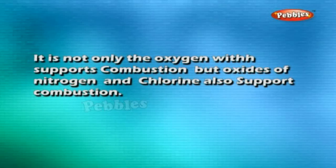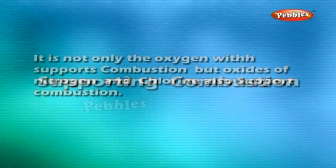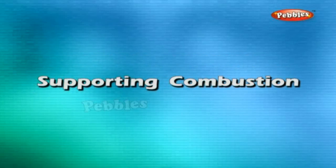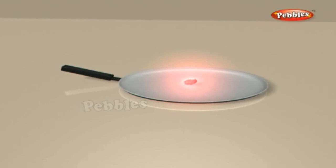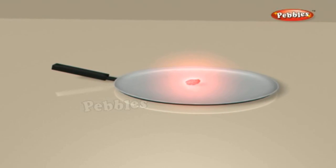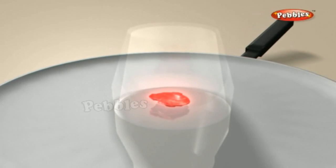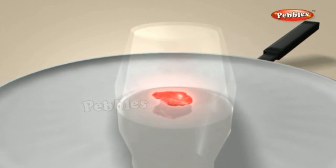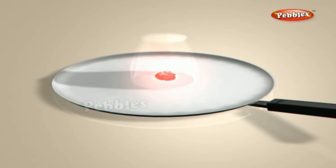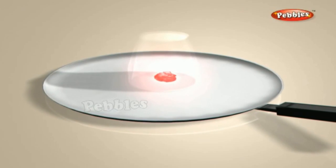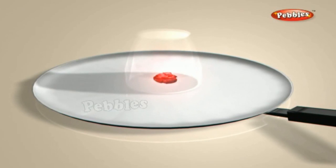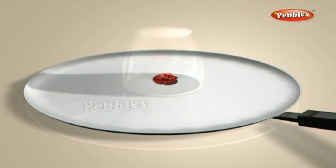Gases which have very low ignition temperatures and can easily catch fire with a flame are called inflammable substances. These include petrol, alcohol, liquefied petroleum gas (LPG), etc. The fast rate of combustion is called rapid combustion. Sometimes, a large volume of gas is liberated during combustion besides the production of heat and light.